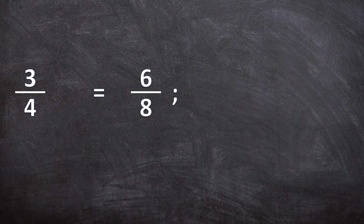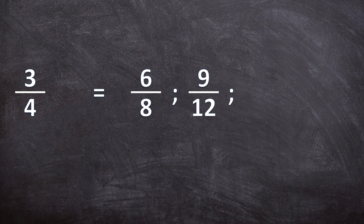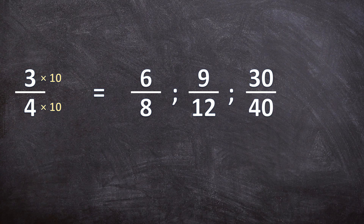For the next fraction, I'm going to multiply the numerator and the denominator by three: three times three is nine, over four times three is twelve. And for the last example, I'm going to multiply the numerator and the denominator by ten: three times ten is thirty, over four times ten is forty. So these are my three equivalent fractions.